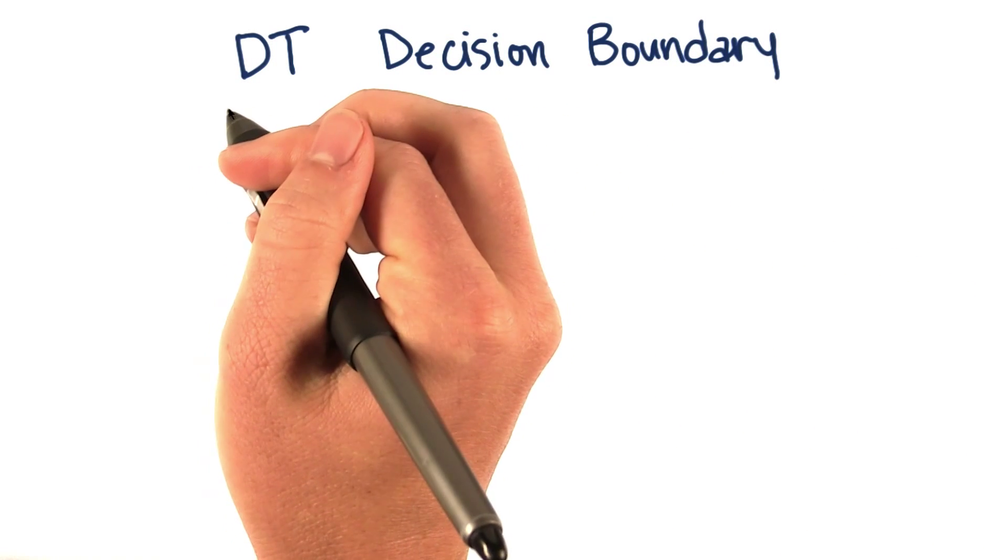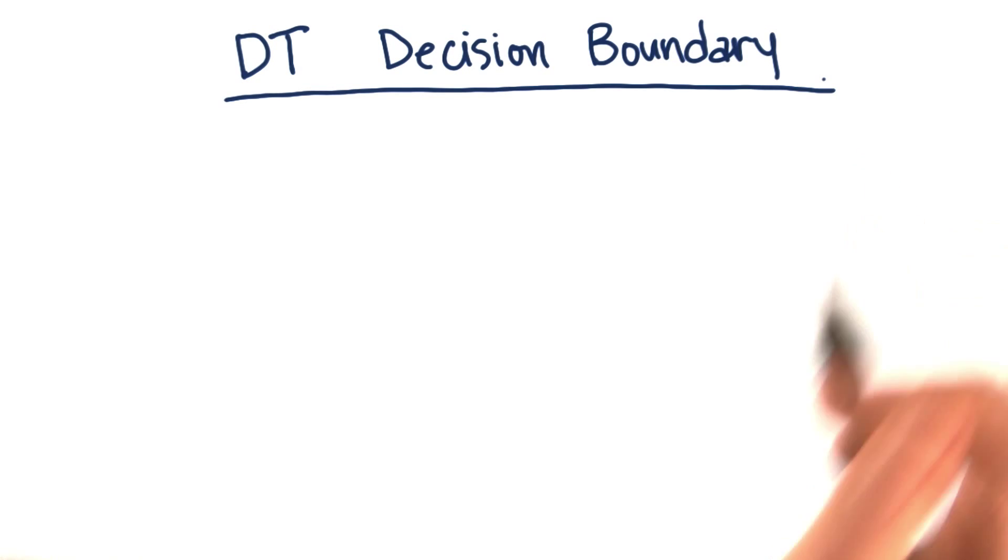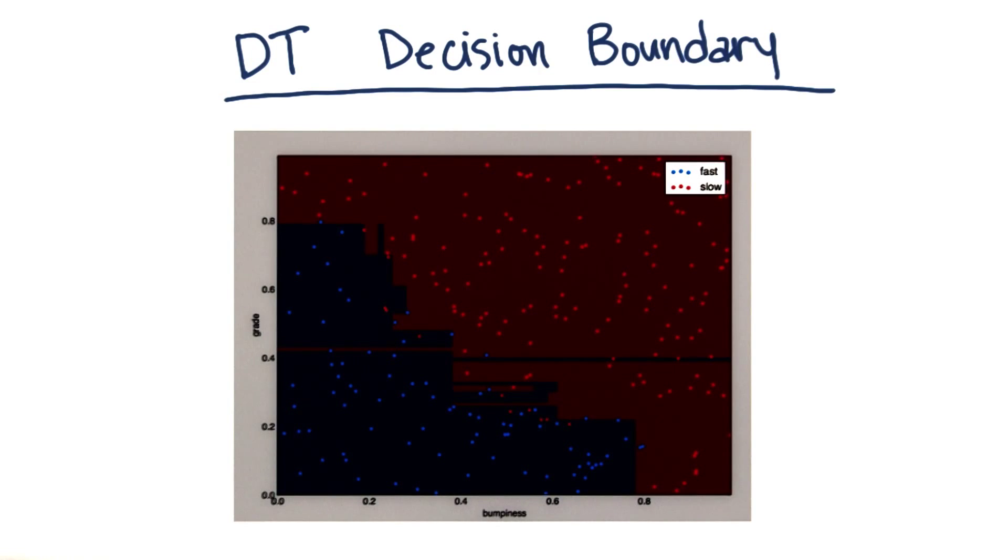So I hope you had some success with your decision tree in scikit-learn. Now let me show you the decision tree decision boundary that I got when I tried this problem. Here's what I got, and you can immediately see that the decision tree decision boundary is very distinctive.